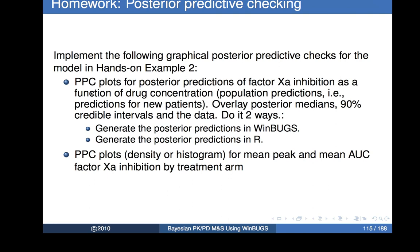The idea was to do a posterior predictive checking plot for looking at factor Xa inhibition as a function of drug concentration, using population predictions — predictions for new patients as opposed to individual predictions. The idea would be to calculate medians of the MCMC predictions and 90% credible intervals, plot those as curves, and overlay the observed data as symbols. And then to do it in two different ways: one using WinBugs for the simulations, and the other doing the simulations in R.